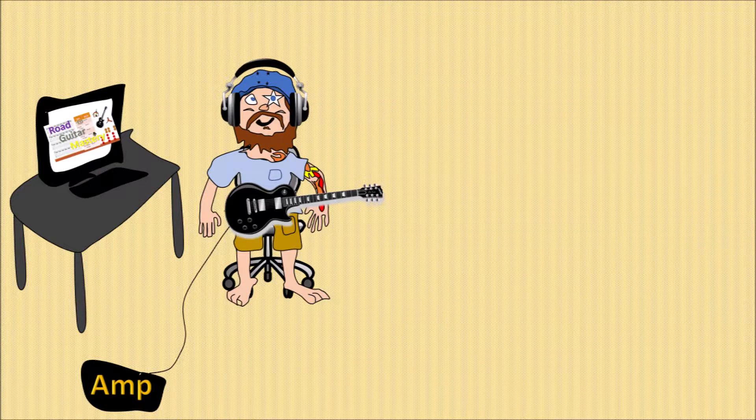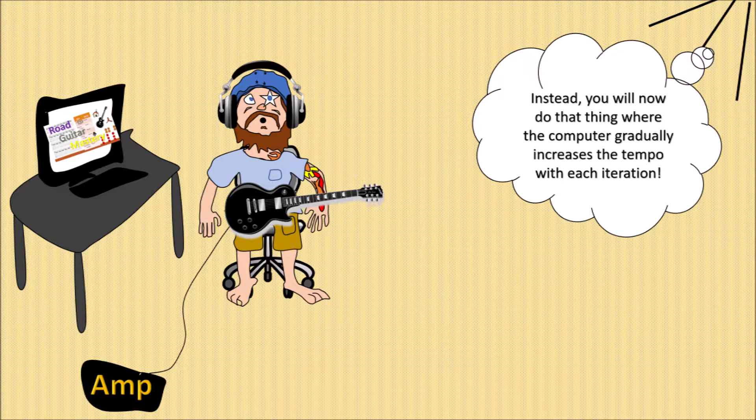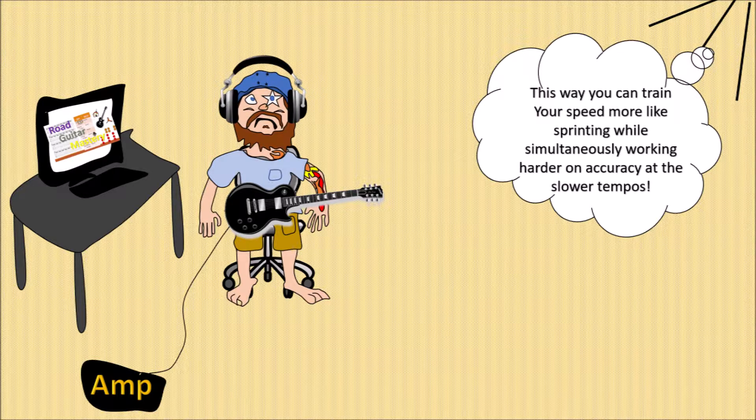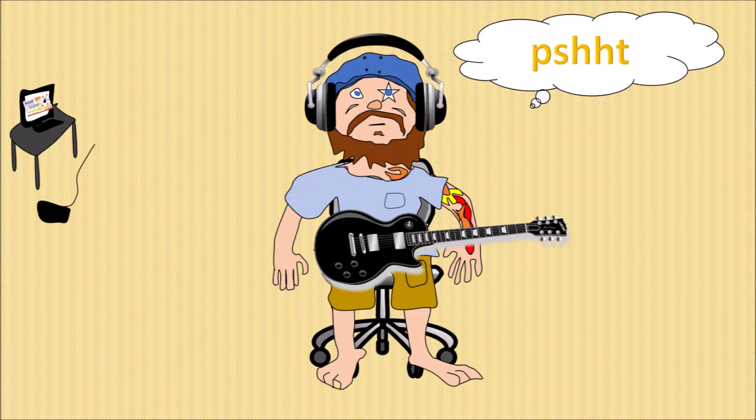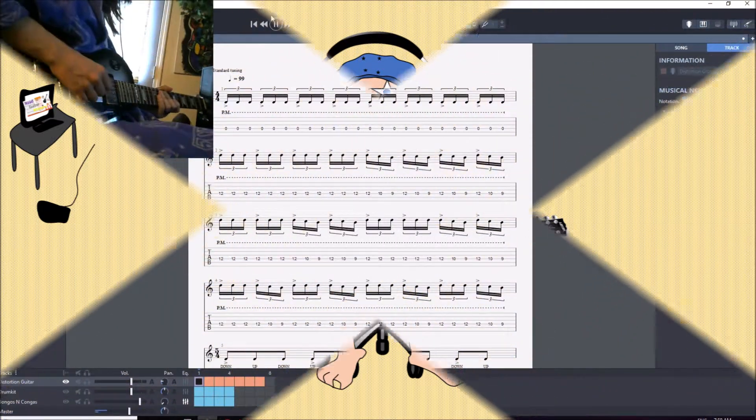Word came down from our corporate sponsors today and they said, no more time for the next marathon. Instead, you will now do that thing where the computer gradually increases the tempo with each iteration. This way you can change your speed, more like sprinting, while simultaneously working harder yet at slower tempos. I says, what do they know? Oh well, I guess I'll give it a shot.